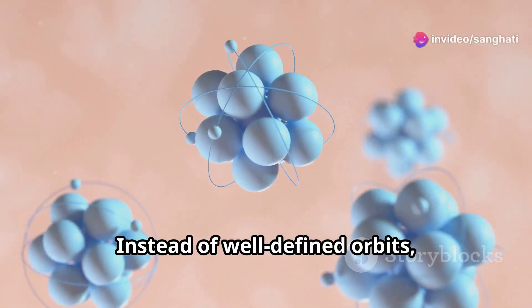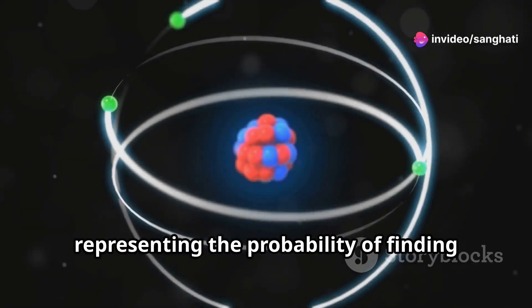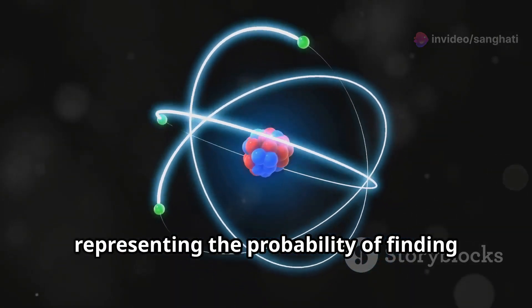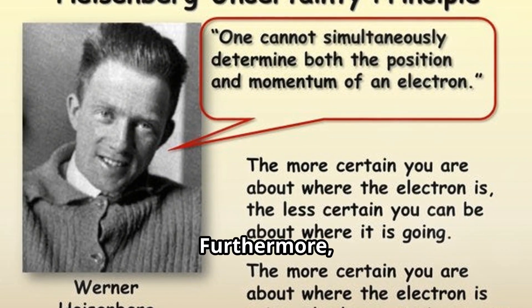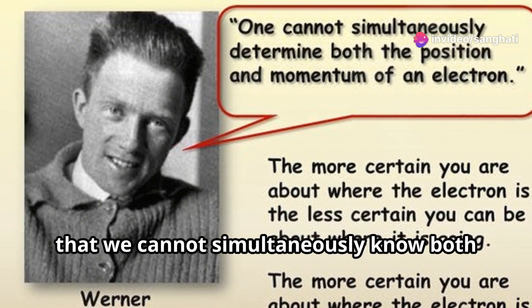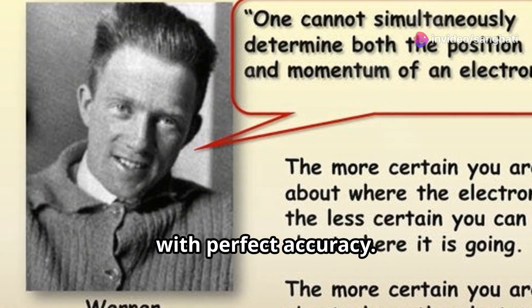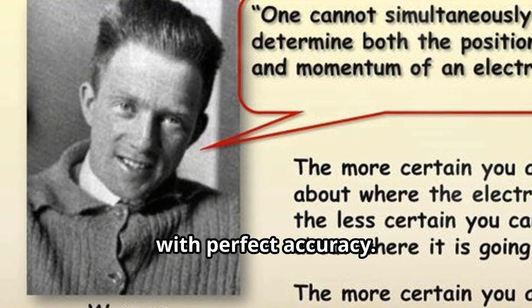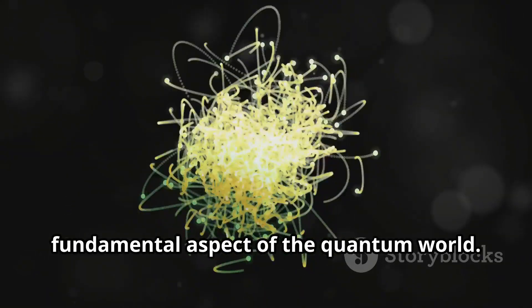Instead of well-defined orbits, electrons exist in clouds called orbitals, representing the probability of finding an electron in a particular region of space. Furthermore, Heisenberg's uncertainty principle states that we cannot simultaneously know both the position and momentum of an electron with perfect accuracy. This inherent uncertainty is a fundamental aspect of the quantum world.